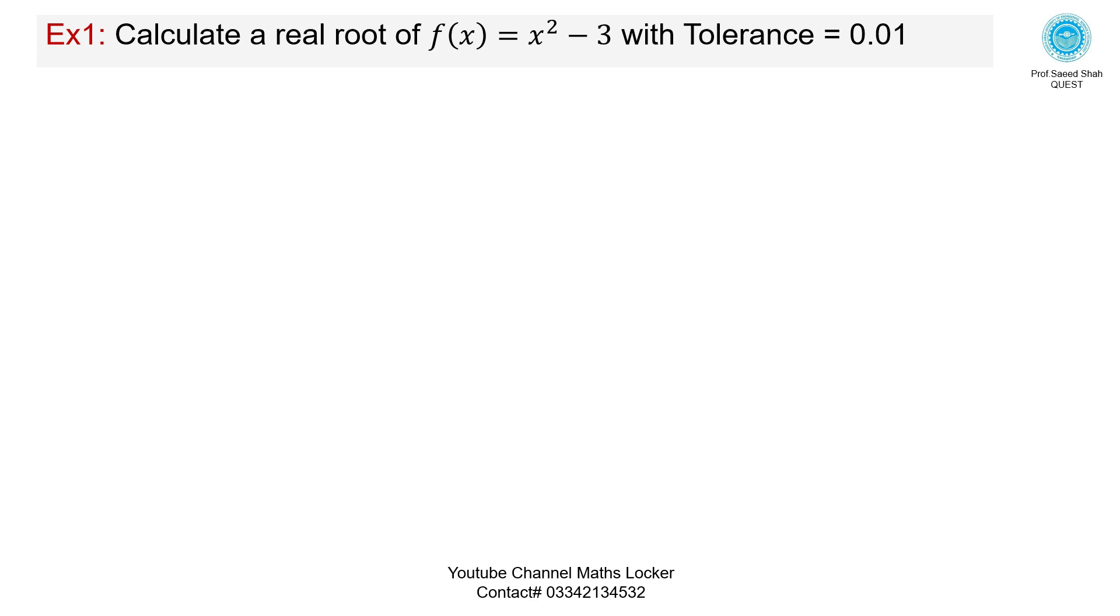Exercise number one: Calculate a real root of F of X equals X squared minus 3 with tolerance 0.01. First, for evaluation of the problem, we will calculate the interval where a real root lies.